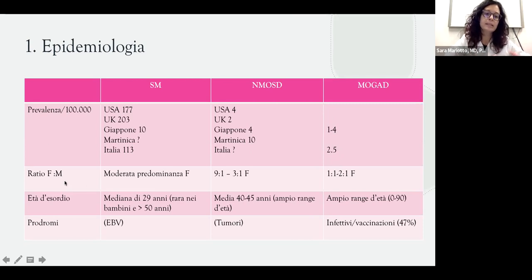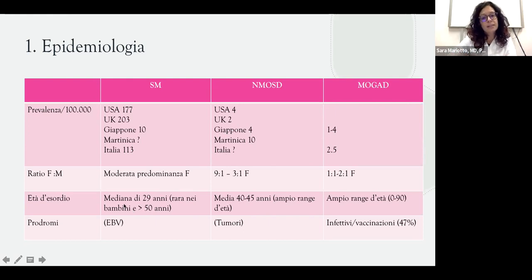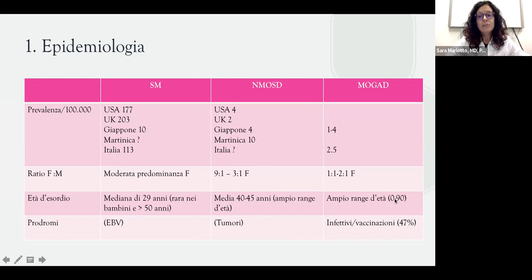Un'altra differenza epidemiologica è la distribuzione maschi e femmine. La sclerosi multipla ha una moderata prevalenza femminile; la neuromielite ottica ha una prevalenza femminile molto più importante, fino a 9 a 1. MOGAD è quasi uguale negli uomini e nelle donne, con una leggera prevalenza di 2 a 1 nelle donne. L'età d'esordio per la sclerosi multipla è circa 29 anni; la neuromielite ottica tende ad esordire a un'età più avanzata, mentre MOGAD ha un range molto ampio, dagli 0 ai 90 anni.